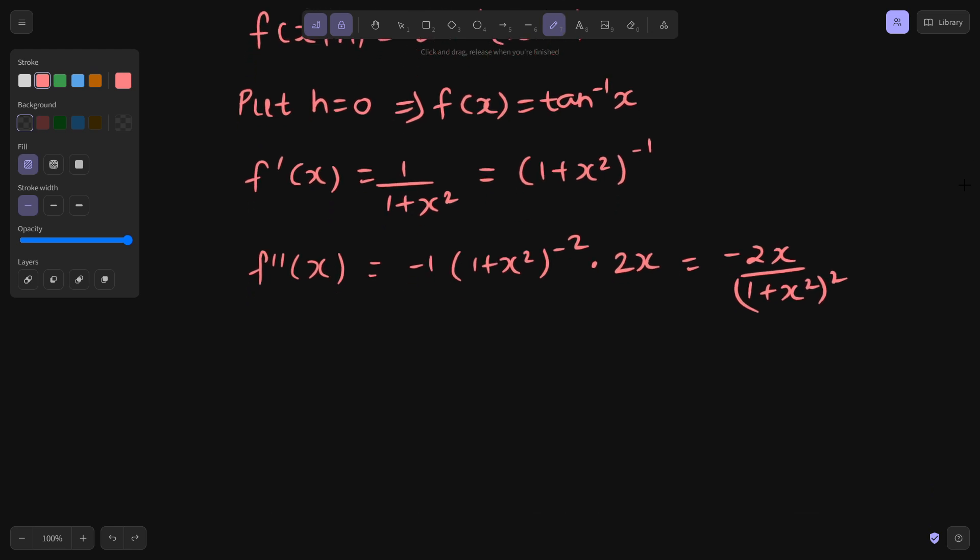What is the Taylor series expansion? We have f of x plus h equals f(x) plus h times f dash x plus h square upon 2 factorial times f double dash x and so on.